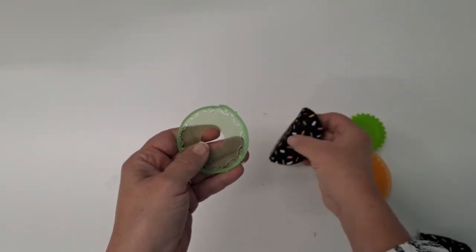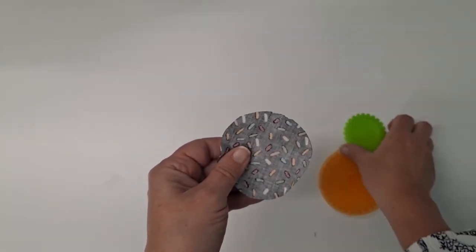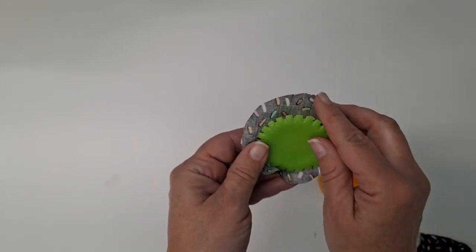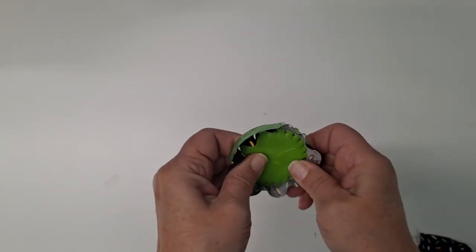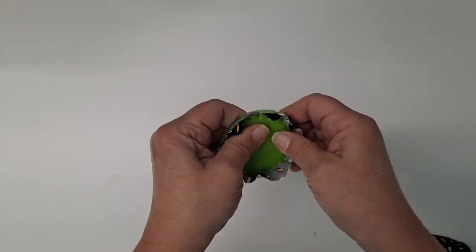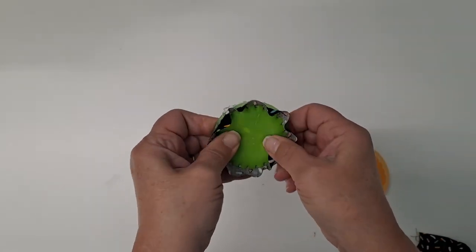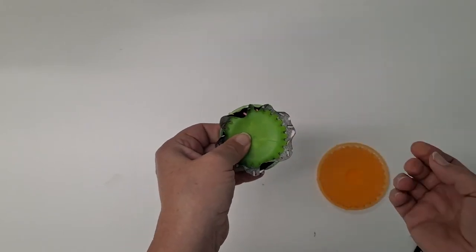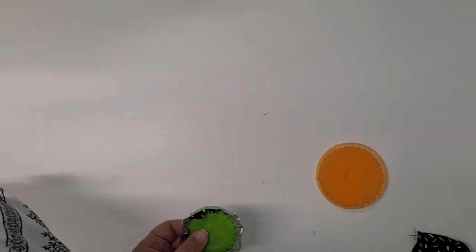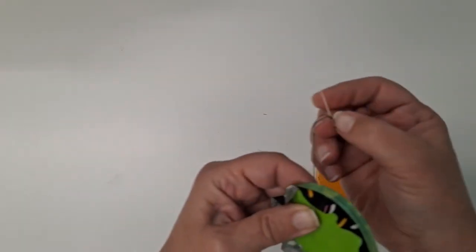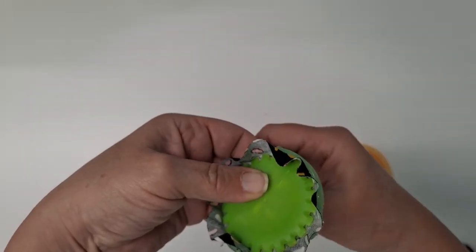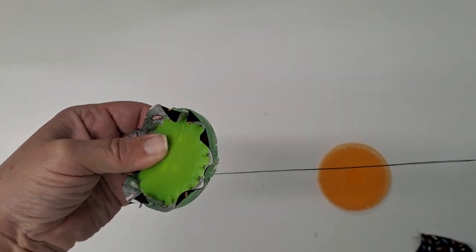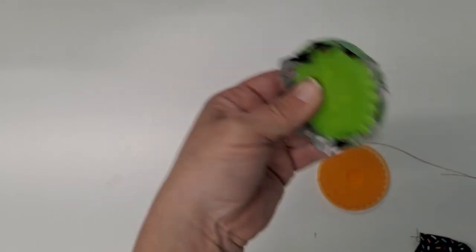But we're going to put our fabric in, kind of center it around, snap it in place. And then we're going to take our needle and thread again, tie a knot in the end of our thread.